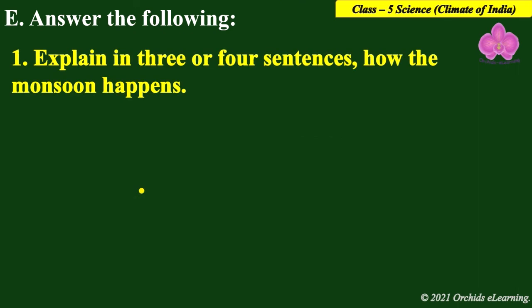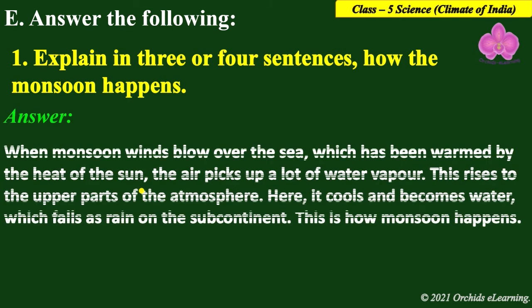Next, answer the following questions. First: explain in three or four sentences how the monsoon happens. Answer: when monsoon winds blow over the sea, which has been warmed by the heat of the sun, the air picks up a lot of water vapor. This rises to the upper parts of the atmosphere, where it cools and becomes water, which falls as rain on the subcontinent. This is how the monsoon happens.